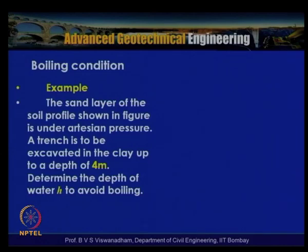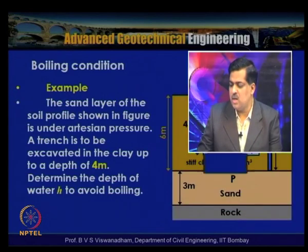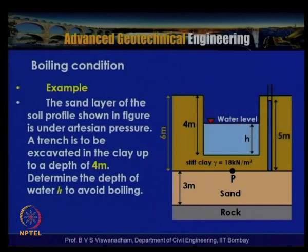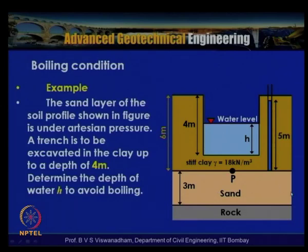Let us consider this example on the boiling condition. In this problem a sand layer of the soil profile is shown under artesian conditions — there is a stiff clay layer, a sand layer, and a rock strata. This sand layer is subjected to artesian pressure, meaning it has a continuous source of water maintaining a head equivalent to 5 meters. So when you measure the pressure at that point, the head of water is measured as 5 meters.